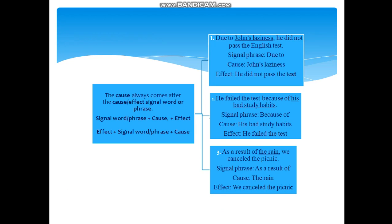Such examples demonstrate the ways cause and effect signals are used. For example, the cause always comes after the cause effect signal word or phrase. Signal word phrase plus cause and effect, effect plus signal word phrase plus cause. For example, due to John's laziness, he did not pass the English test. Here signal word is due to, the cause is John's laziness. The effect, he didn't pass the test. The second example, he failed the test because of his bad study habits. The effect, he failed the test. And the third example, as a result of the rain, we cancelled the picnic. Signal phrase, as a result of the cause, the rain and the effect, we cancelled the picnic.